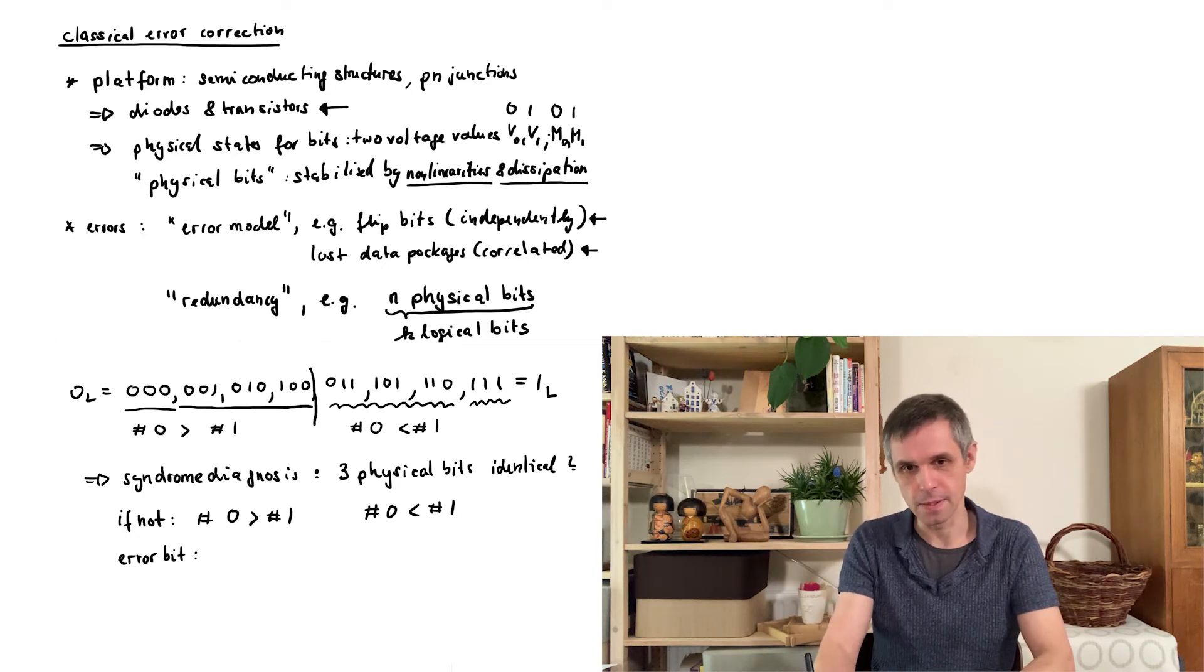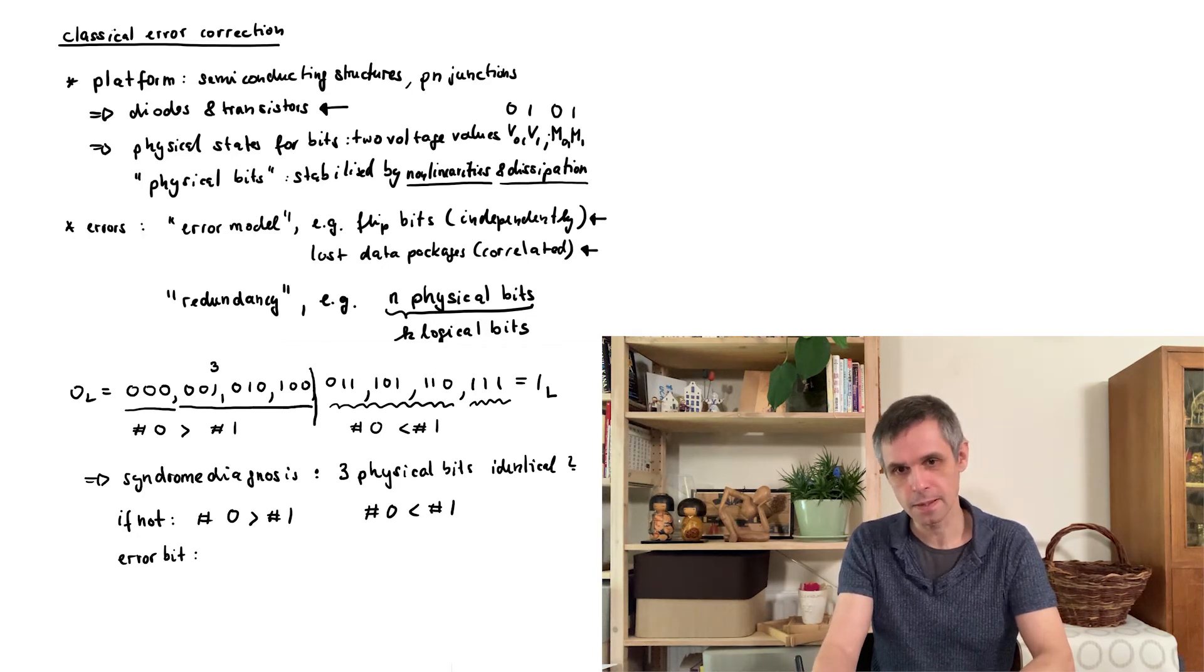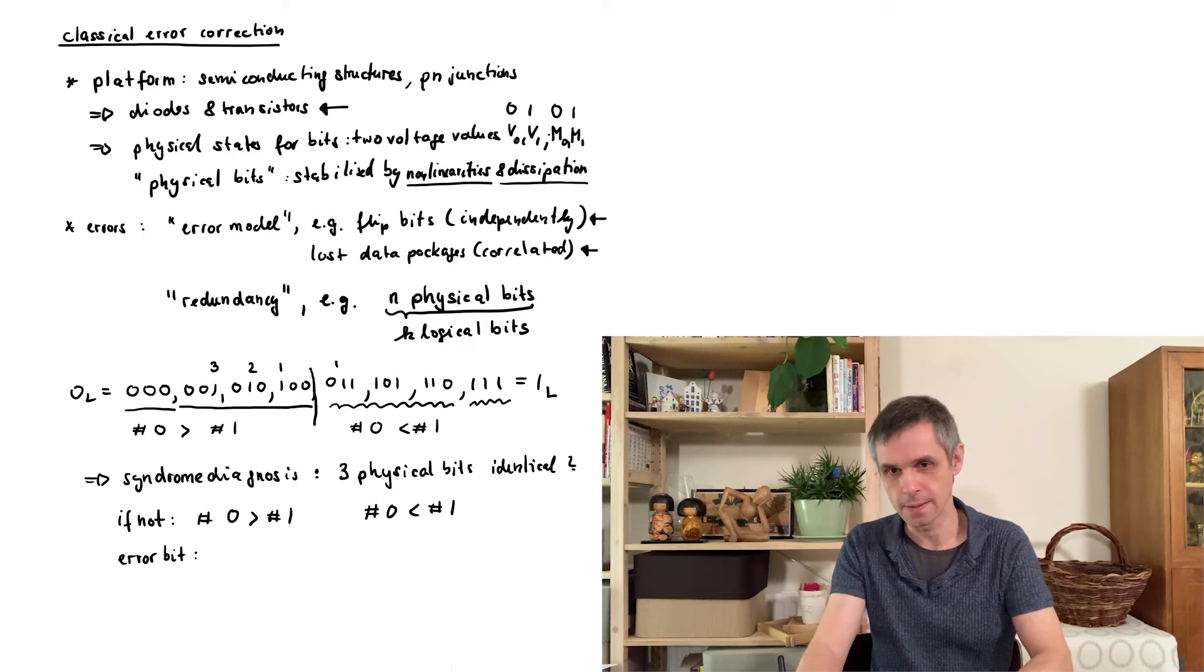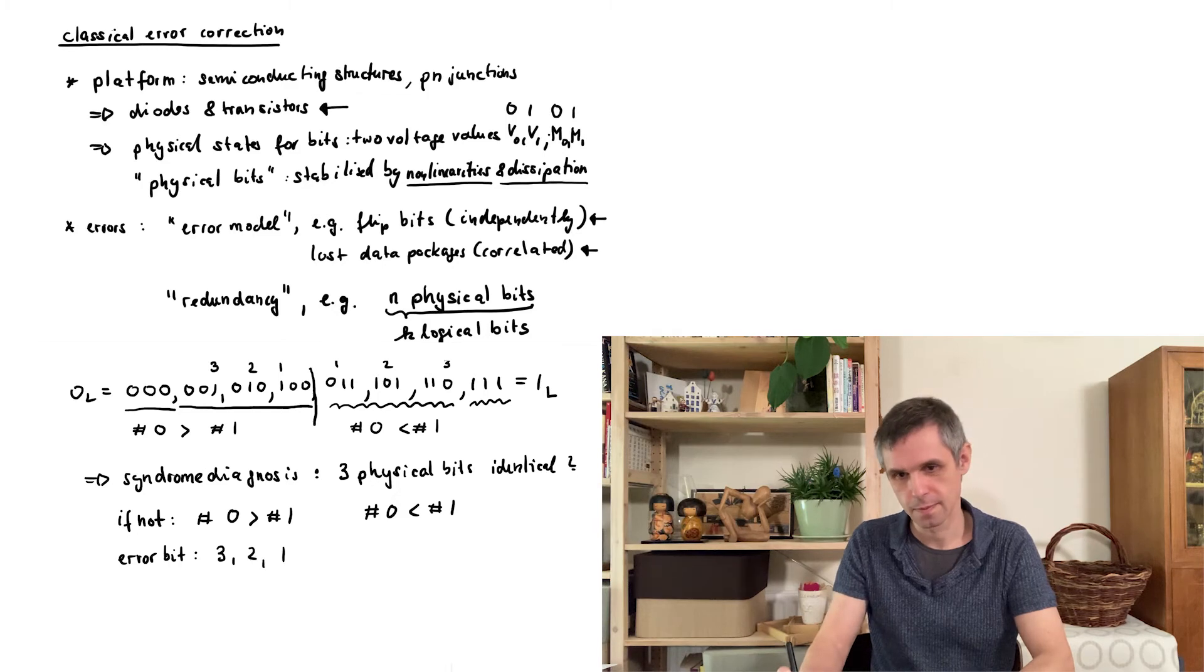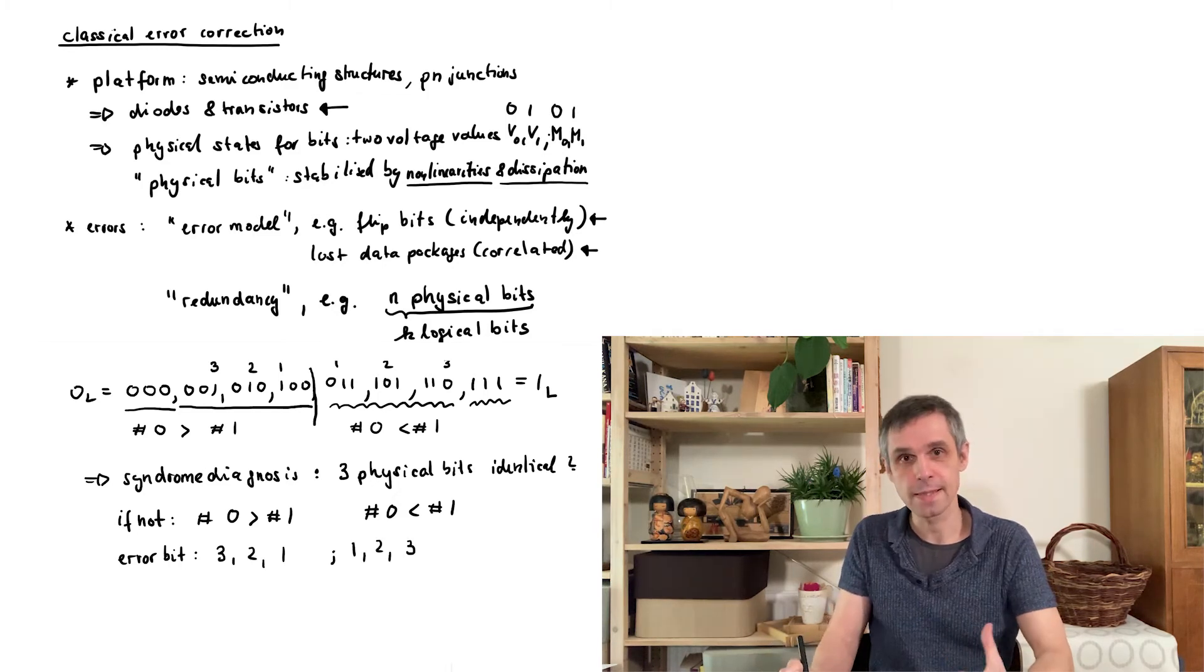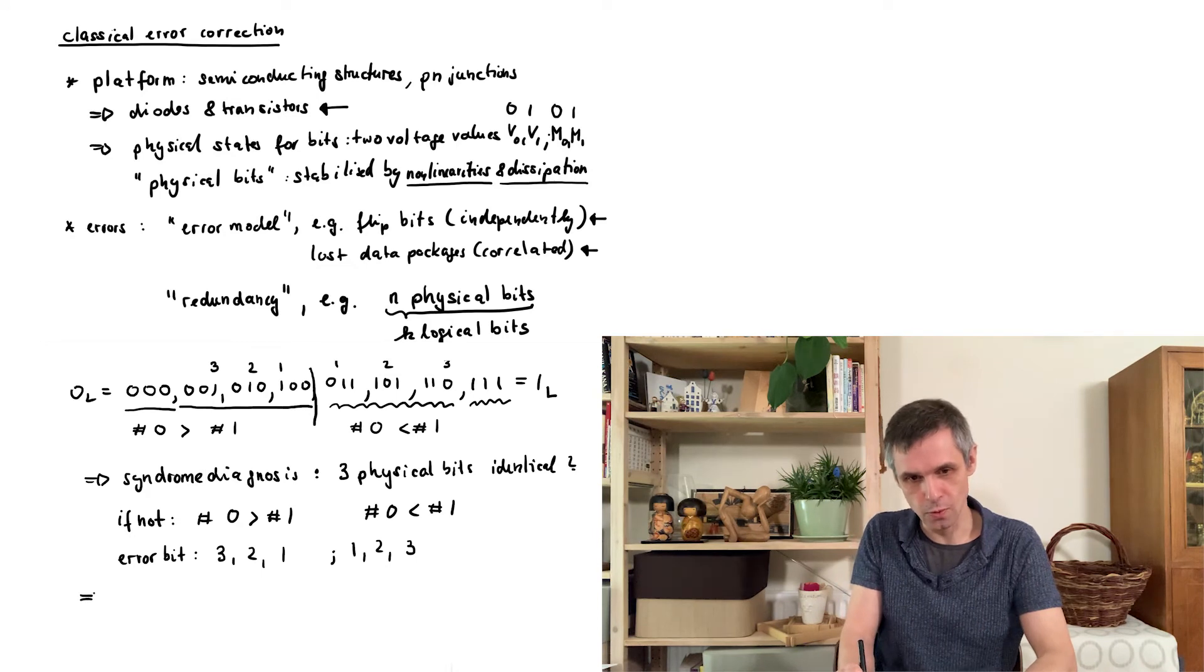For instance in the examples above, this would be the third bit, or the second bit, or the first bit in these three cases. Or here it would be the first, or the second, or the third one.